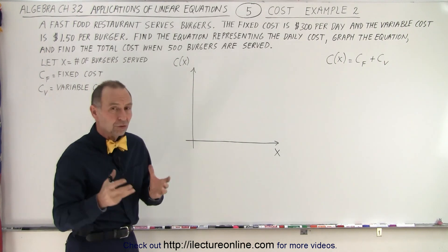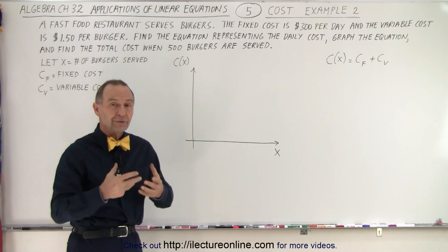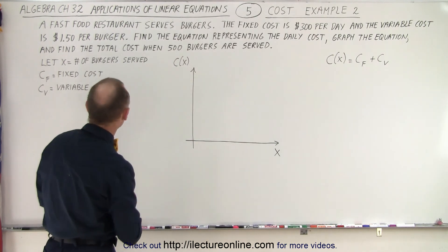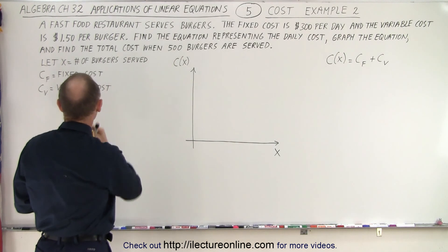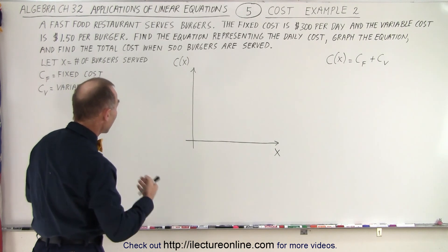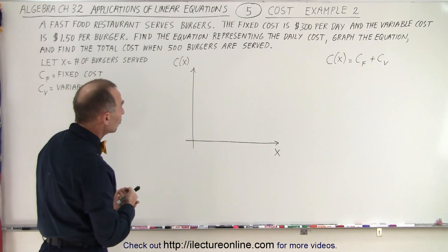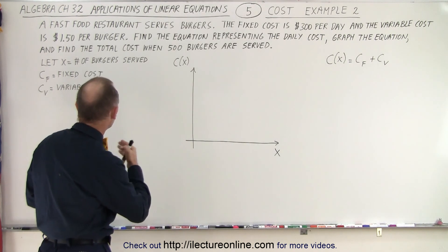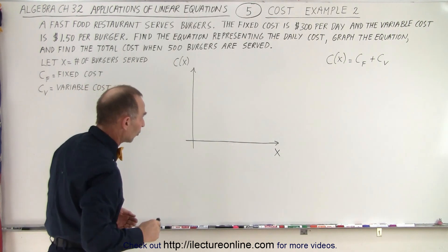And then there's the variable cost, the food, the cost you have to pay for the food that is needed to make the hamburgers. That's the variable cost and it costs $1.50 per burger. Find the equation representing the daily cost, graph the equation, and find the total cost when 500 burgers are served.